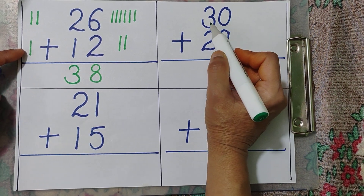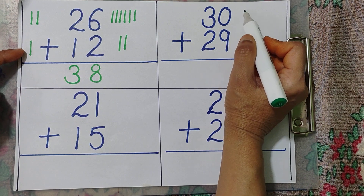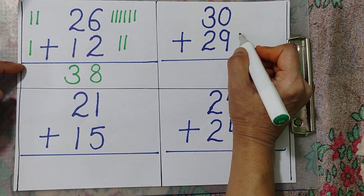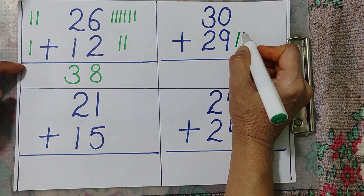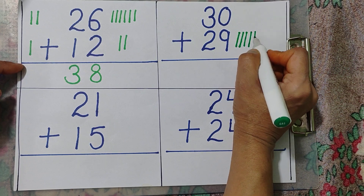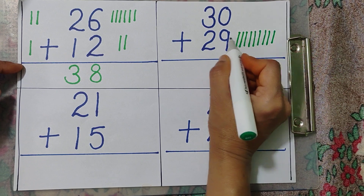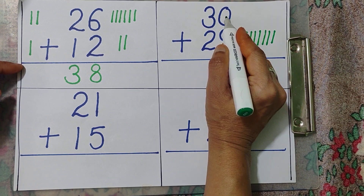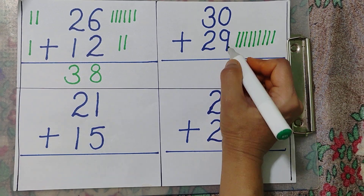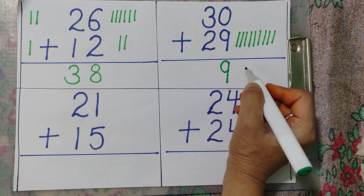Ones: zero plus nine. Zero ka — zero, kuch bhi nahi (nothing at all). Nine ka nine lines: one, two, three, four, five, six, seven, eight, nine. Nine and zero ka koi lines nahi. Nine.